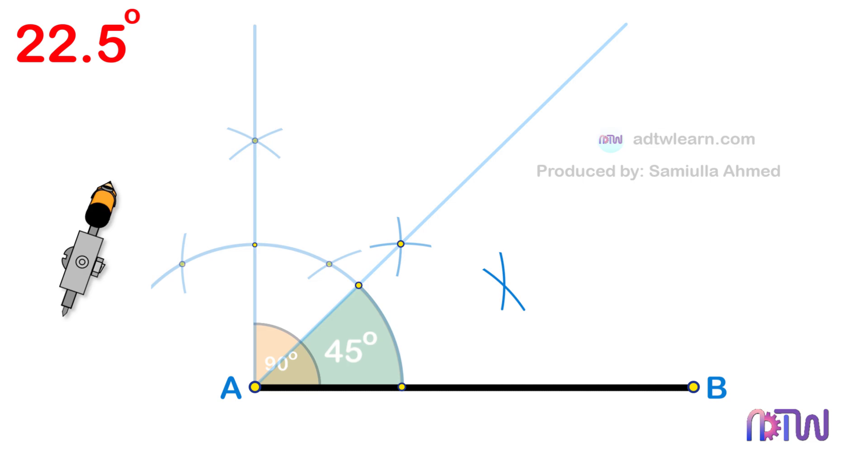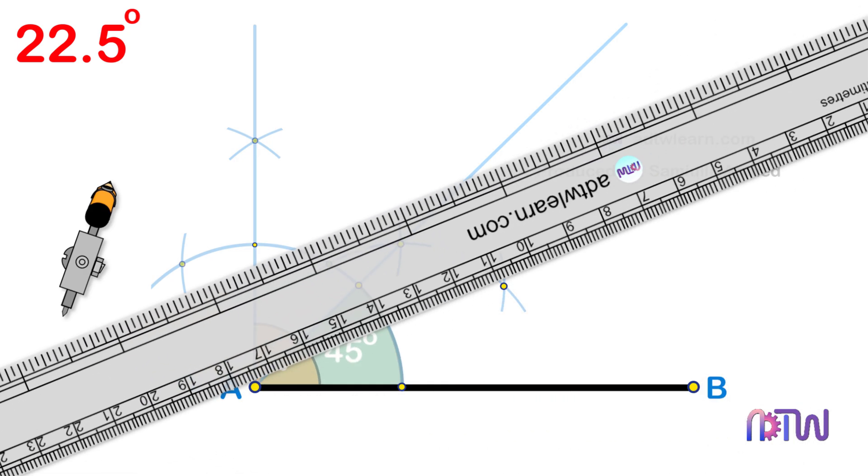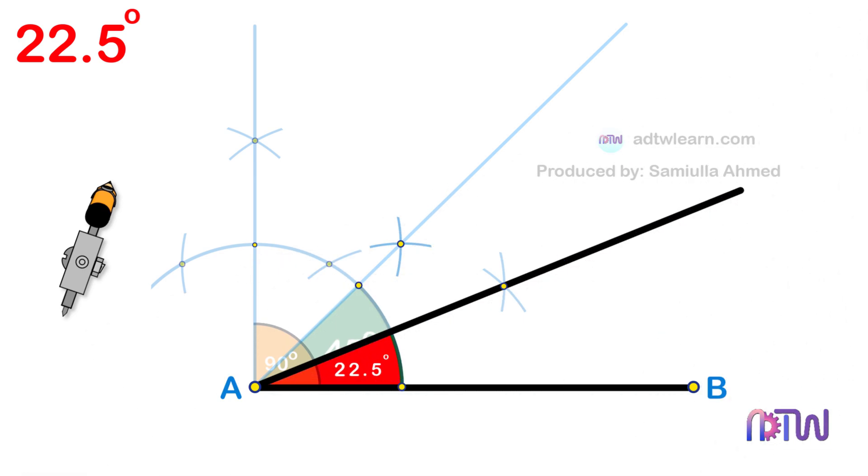In the end, draw a line passing through this point from endpoint A of the line segment. This line will be inclined at a 22.5 degree angle. You can double-check the angle using a protractor.